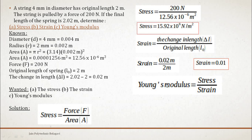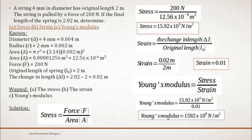Young's modulus is stress by strain. This Young's modulus is given by capital E, strain is given by small letter E. Stress by strain - stress is 15.92 into 10 raised to 6 newton per meter square and strain is 0.01. So Young's modulus capital E is 15.92 into 10 raised to 6 newton per meter square.